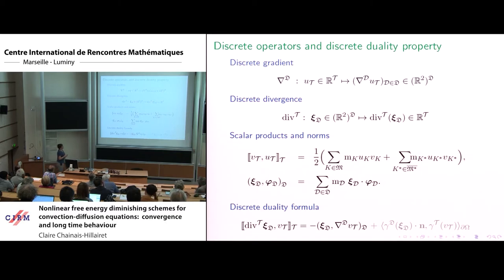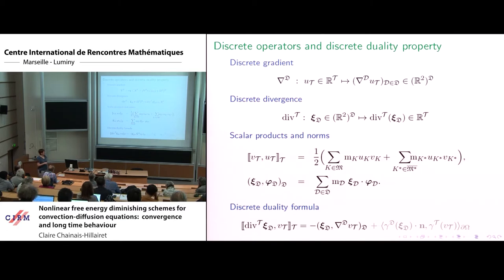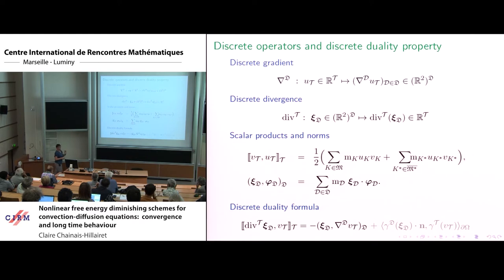The space of discrete unknowns is R^2, meaning the discrete unknowns are defined for the centers of the primal mesh and the vertices — the centers of the dual mesh. The space for discrete gradients is the set of vectors constant on each diamond. We have a discrete gradient operator applying to the set of unknowns and defining a discrete gradient on each diamond, and a discrete divergence operator applying to vectors constant on each diamond, giving a discrete divergence for each primal and dual cell.